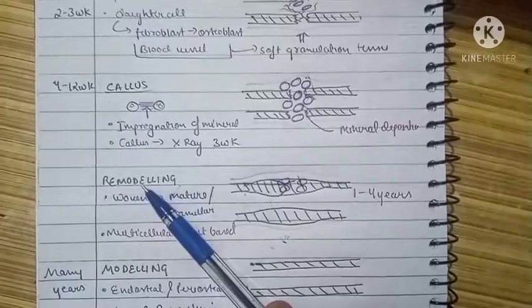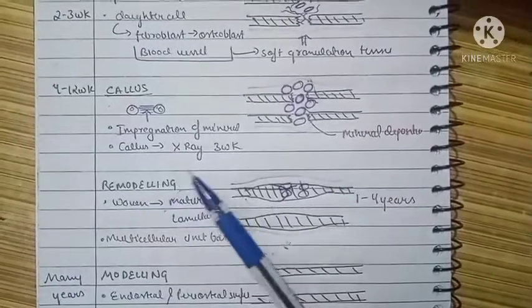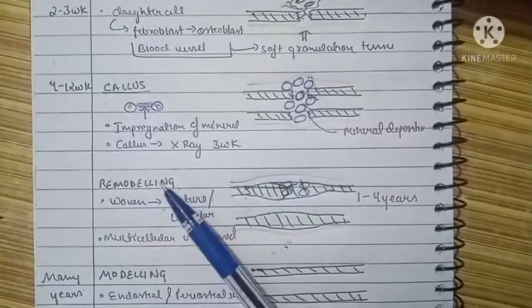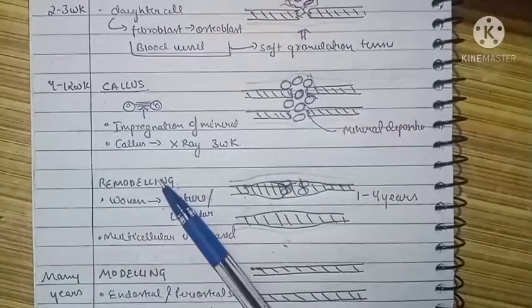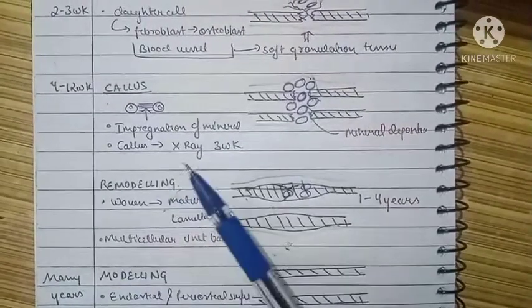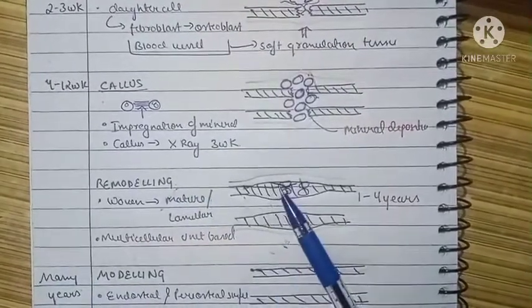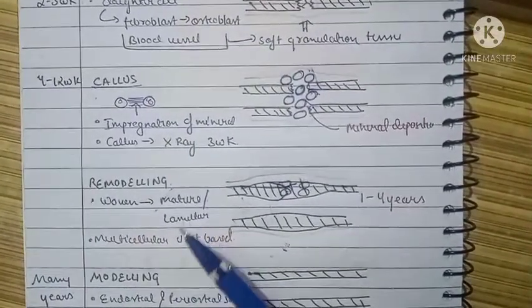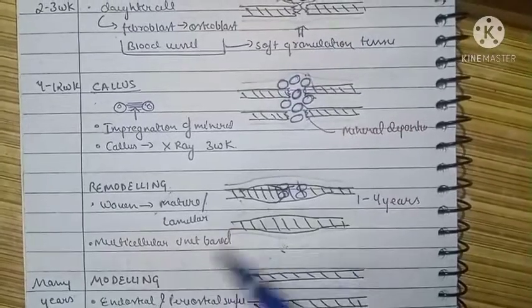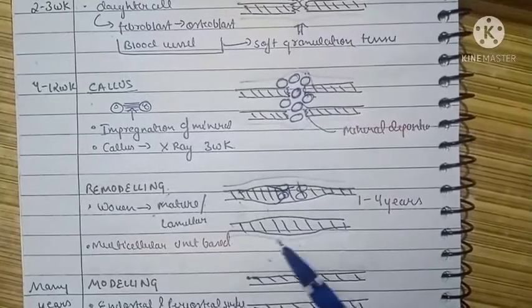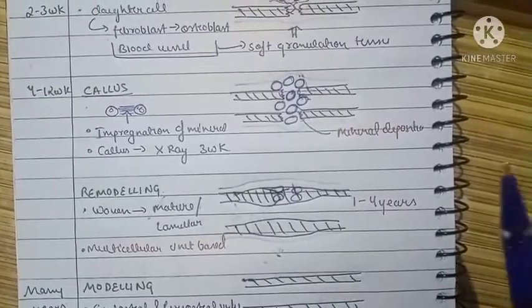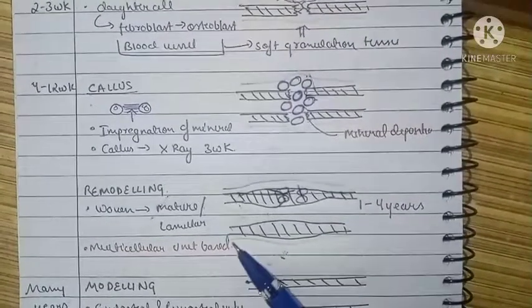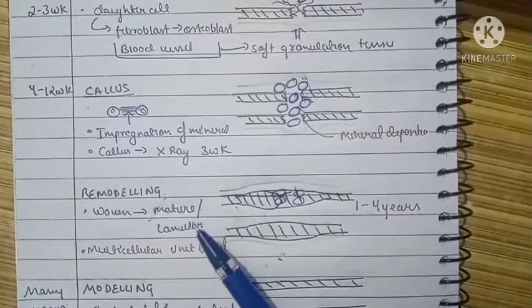The fourth stage is stage of remodeling. Earlier this stage was known as consolidation, now it is known as remodeling. In this stage, the woven bone is converted into mature or lamellar bone. Lamellar bone has more geometrical arrangement of the osteoblasts.